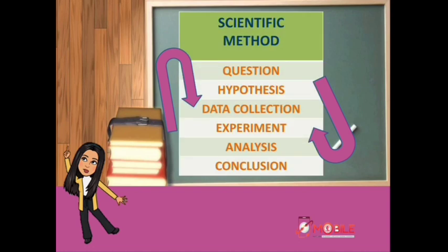The scientific method usually employs all six methods I mentioned, but they don't always occur in the same order. Real scientists usually go back and repeat many times before they come up with the conclusion.